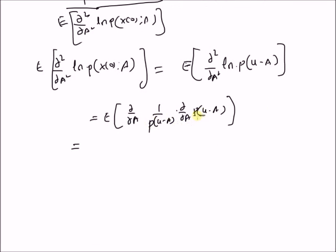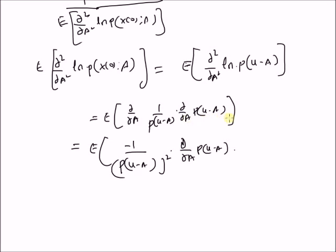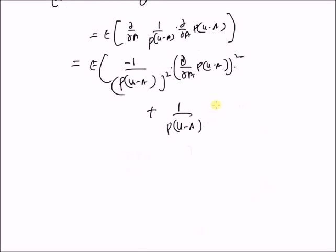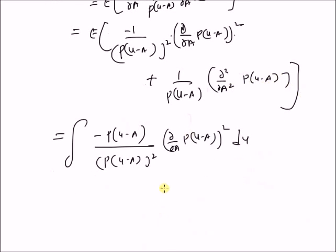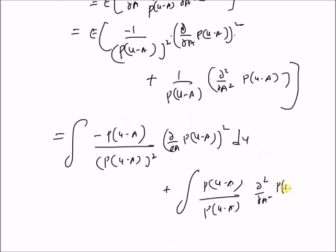Now, we apply the derivative of a product of two functions. This gives the expectation of: the derivative of 1 over P(U minus A), which is minus 1 over P(U minus A) squared times the derivative of P(U minus A), multiplied by another P(U minus A) derivative of P(U minus A) — so that term becomes squared. The next term is plus 1 over P(U minus A) multiplied by the second derivative of P(U minus A) with respect to A.